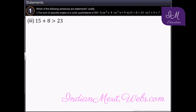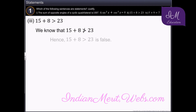The next sentence is: the sum of 15 and 8 is greater than 23. The sum of 15 and 8 gives us 23, so the sentence is false. Hence, the given sentence is a statement. Its truth value is false.